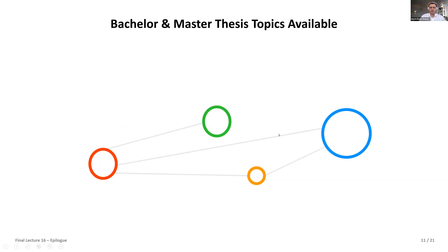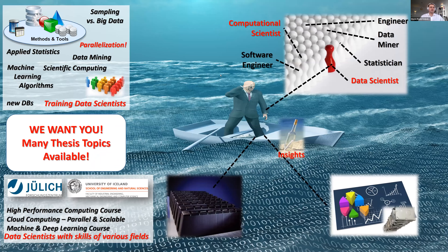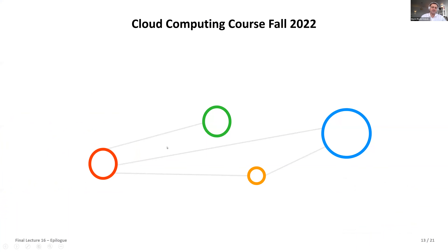A short offer: master's thesis topics are available in the areas of data science and computational science across different physics domains. We also have PhD positions available right now in different countries. Let us know if you are interested — this could be in combination with Jülich, the German research center, meaning you might spend time in Germany or vice versa, like Shadi and Rocco who are on both sides in Iceland and Germany. That could be quite interesting for you.